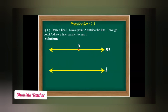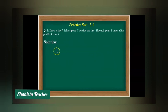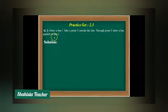Now let's solve question number two. Draw line L, take a point T outside the line, and through point T draw a line parallel to line L. Question number two is the same as question number one — the same technique and the same approach will be applied here.